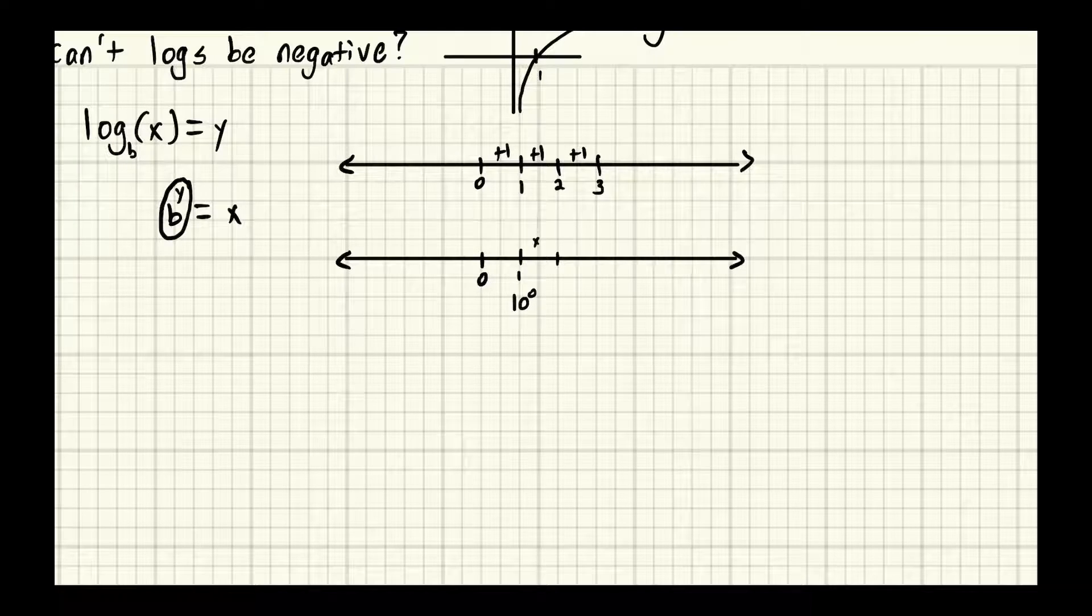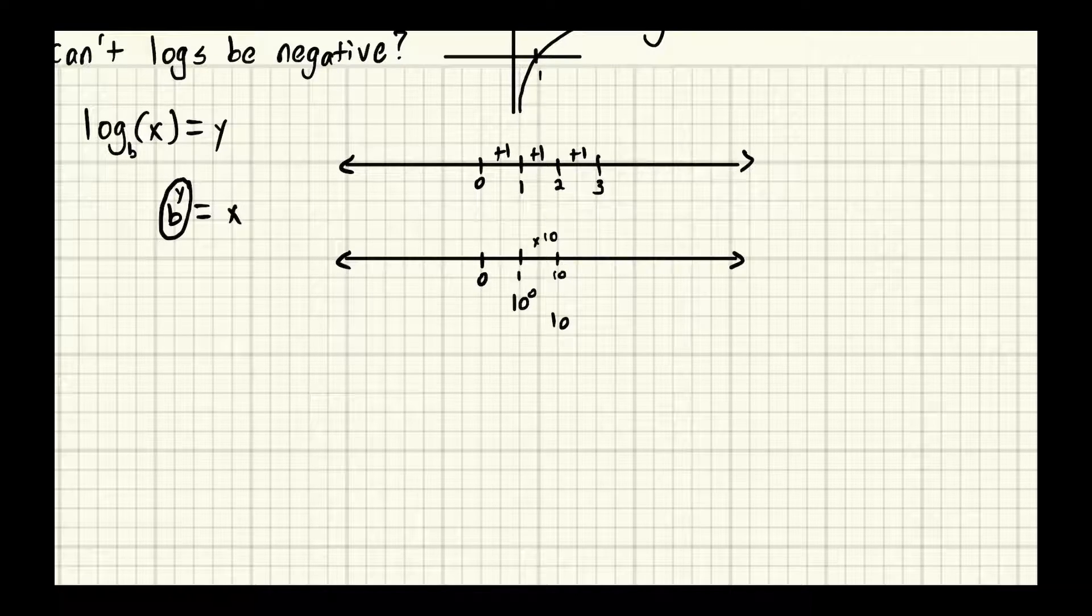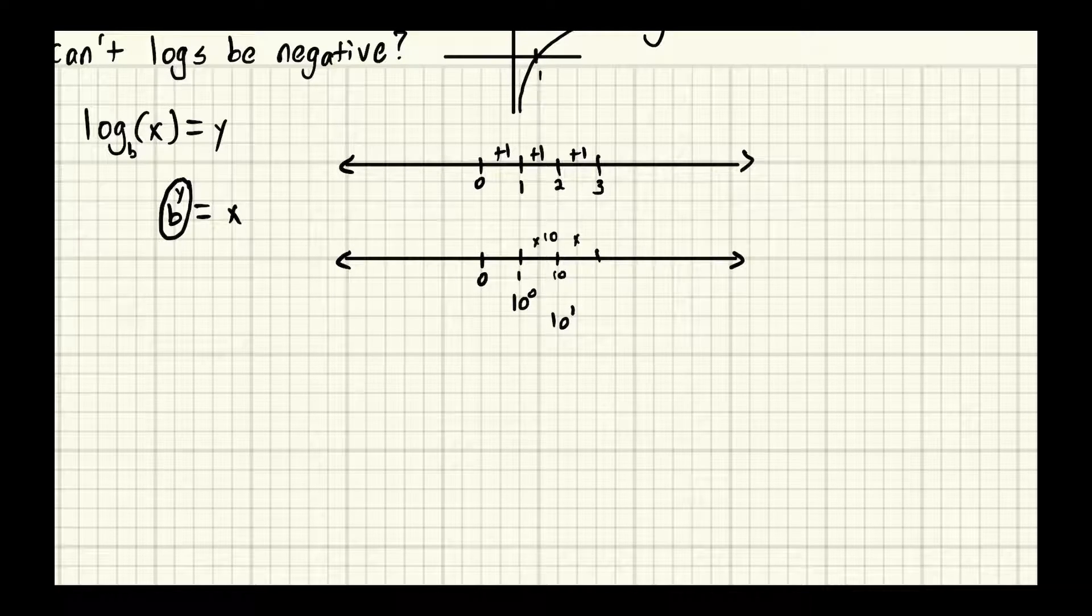Now the next one we do times 10, so that gets to 10 or 10 to the one. And now we go up again and we do a times 10, we get 100. That's 10 squared. We go again, we get a thousand.